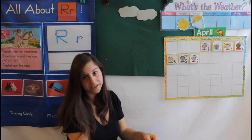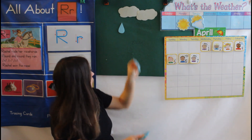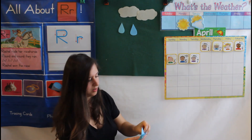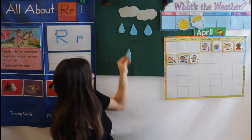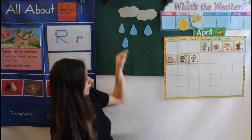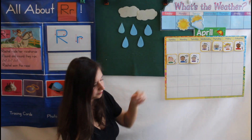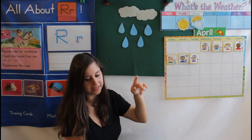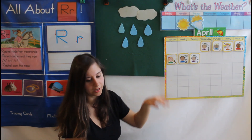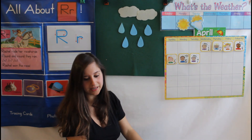Let's start again. One, count with me — two, three, four, five. Five little raindrops dancing on the walk. Pitter patter, pitter patter, that's the way they talk.